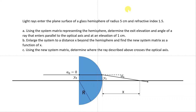Now we are looking at one example about using the matrix method in paraxial optics. This is our first example and it is problem number six in the Pedrotti textbook, though the chapter number is different for different editions. In edition three, this is chapter 18, problem number 6.